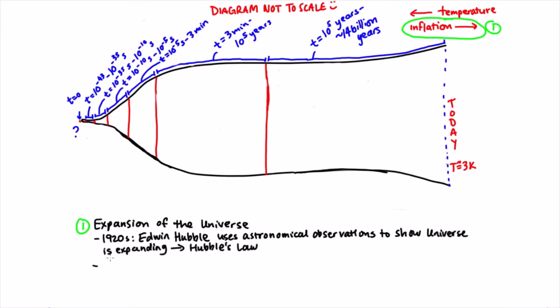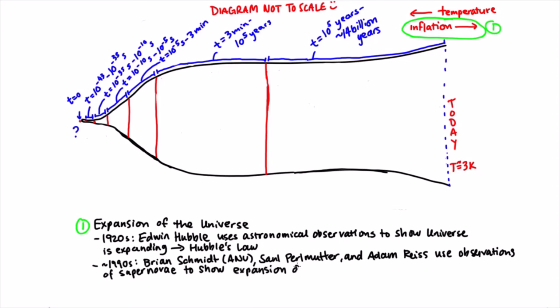More recently, Brian Schmidt, Saul Perlmutter, and Adam Rice won the Nobel Prize in Physics for work using observations of supernovae, that's massive explosions of stars that mark the end of their lives, showing that the expansion of the universe is accelerating.